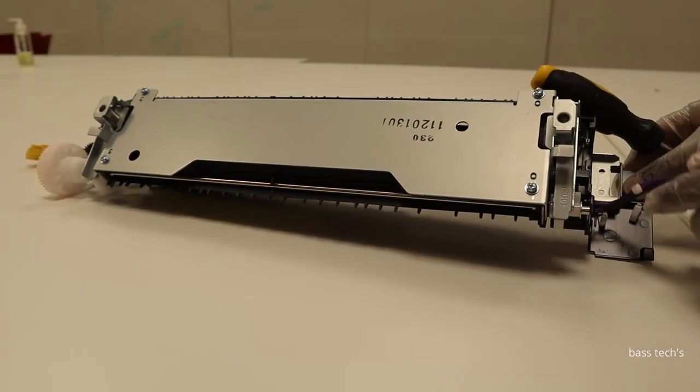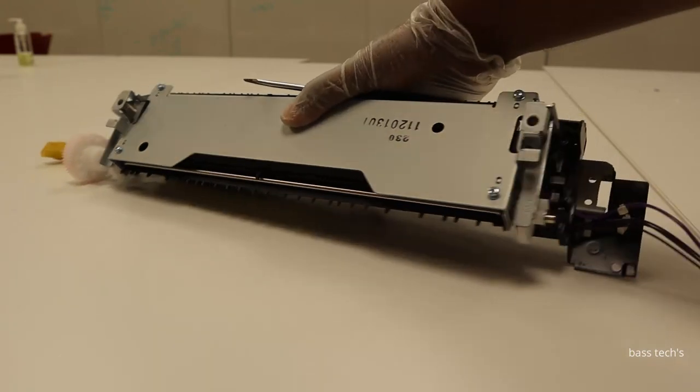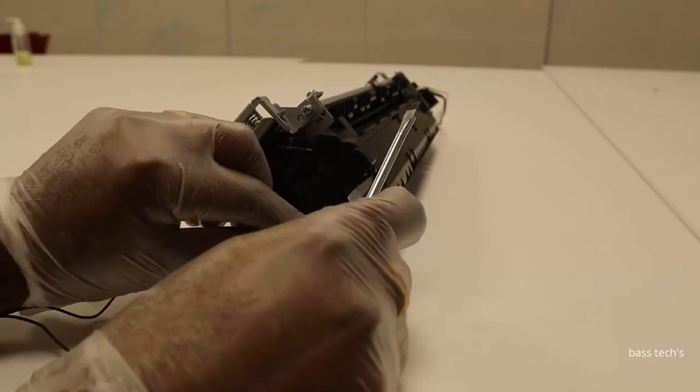Let's see how to dismantle the fixing assembly. There are two locks to remove the cable. Just release the locks and make sure your cable is free.